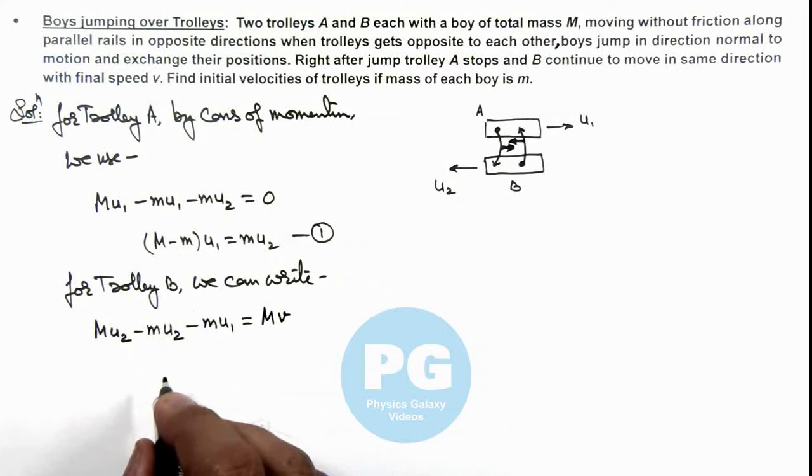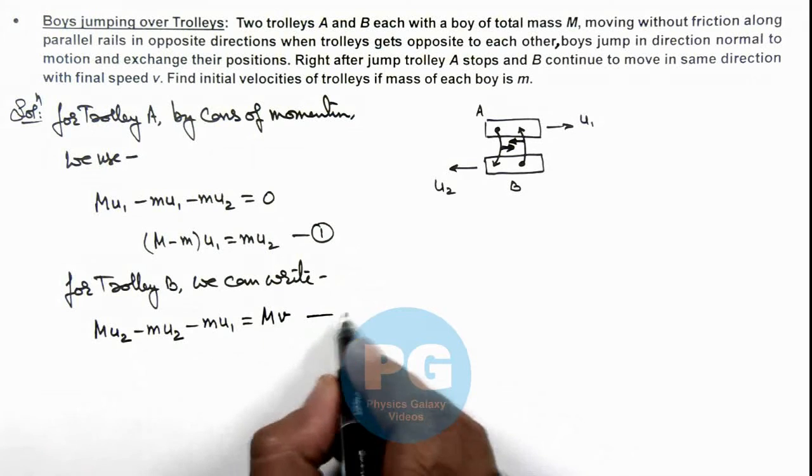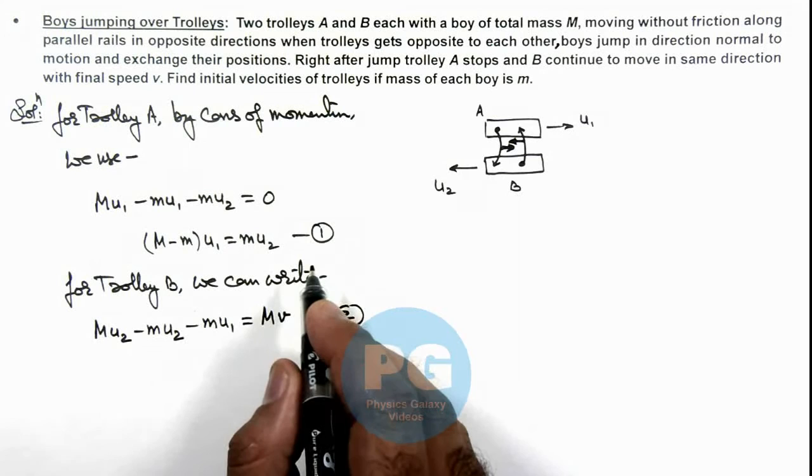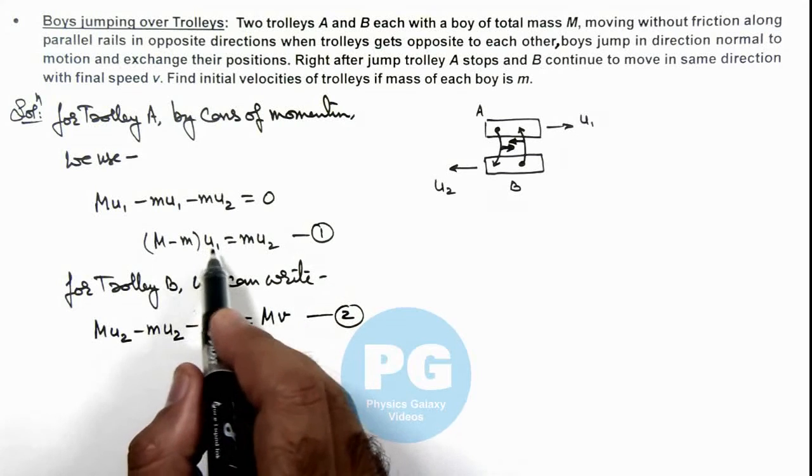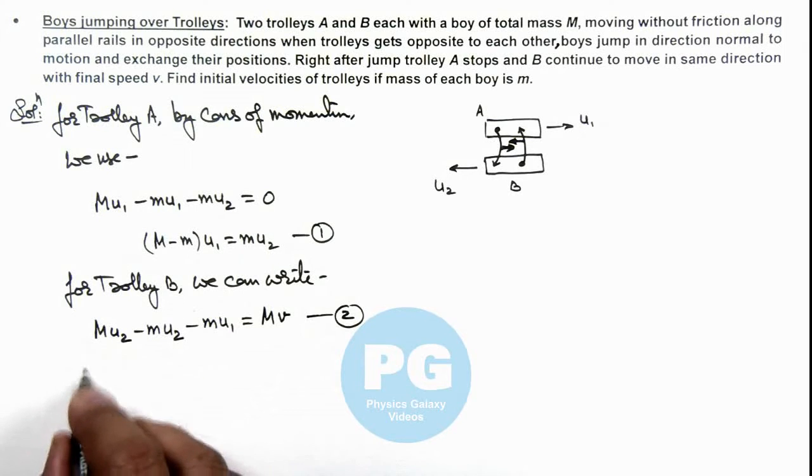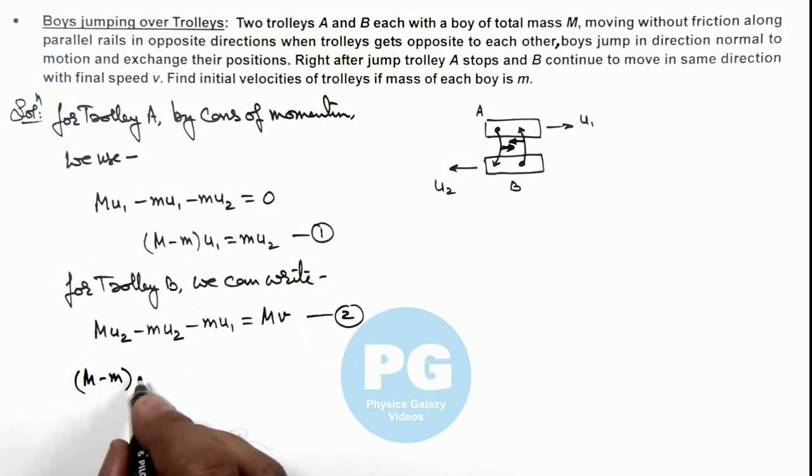So in this situation, here we can solve these equations 1 and 2 and calculate the values of u1 and u2. First we substitute the value of u2 over here to get the value of u1. Here this is (M-m) multiplied by u2, which is (M-m) divided by m into u1.